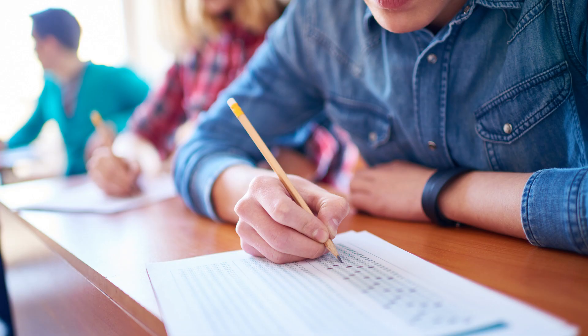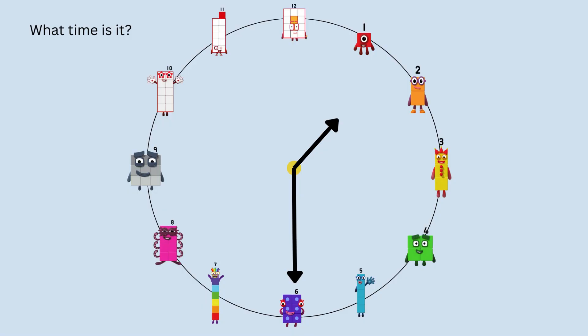Let's try a harder question. What time is it? Oh, big hand is at six. And the little hand is just after one. So it is half past one. Did you get that? Well done. That was really hard.